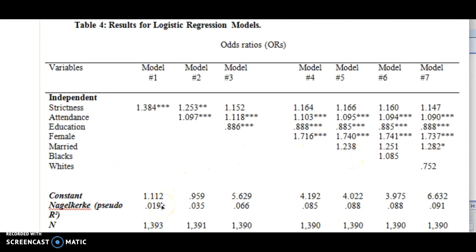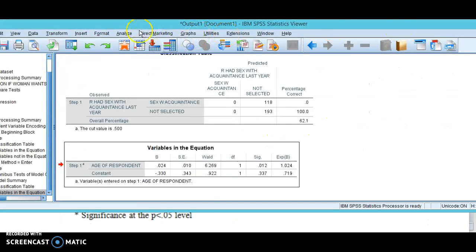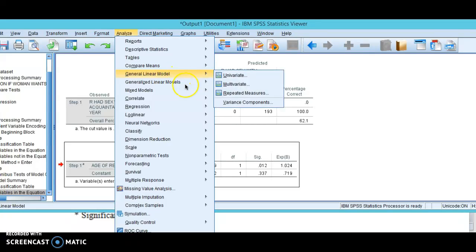Constant, Nagelkirche R-squared, the N, and the odds ratio. And then you star those odds ratios with the ones that are significant and the ones that are not. Let's try throwing one more variable in the equation so you can see how they go.